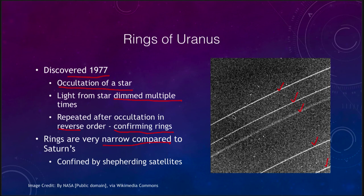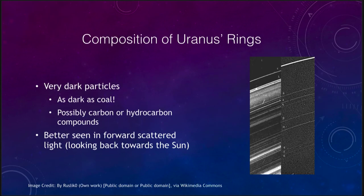The rings of Uranus are very, very thin — not the wide, broad rings of Saturn. They are confined by shepherding satellites: little moons that orbit just on one side and just on the other side, keeping all those particles in line. As one moon orbits and the other moon orbits, their gravity keeps those particles very well confined. The composition of these rings is very dark particles — in fact, as dark as coal.